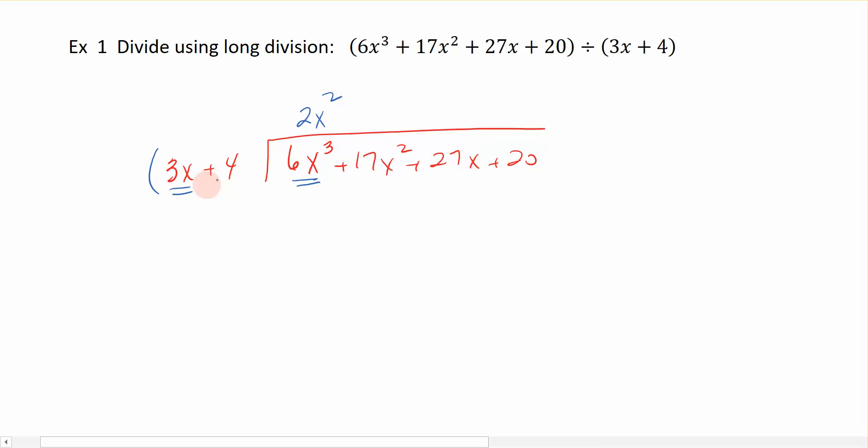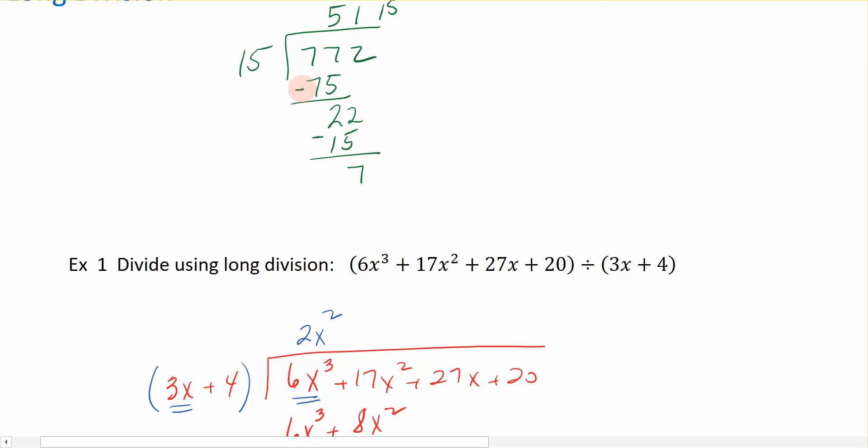Now, when we do polynomial long division, I'm going to surround this binomial with parentheses so that I can remember that this number on the top has to be multiplied into not only the first term, but the second term. It's like the distributive property. So we take 2x squared times 3x, and we get 6x cubed. Then 2x squared times 4 is plus 8x squared.